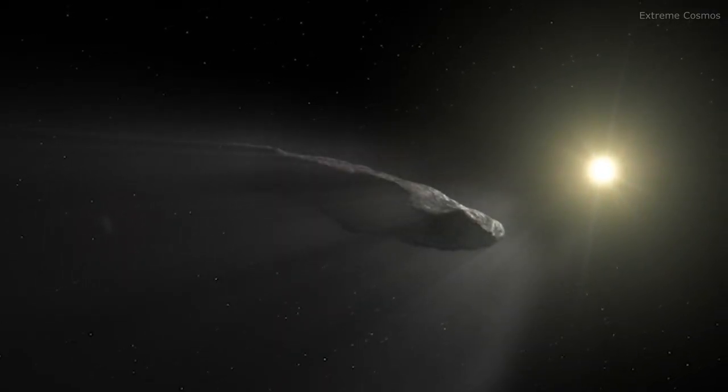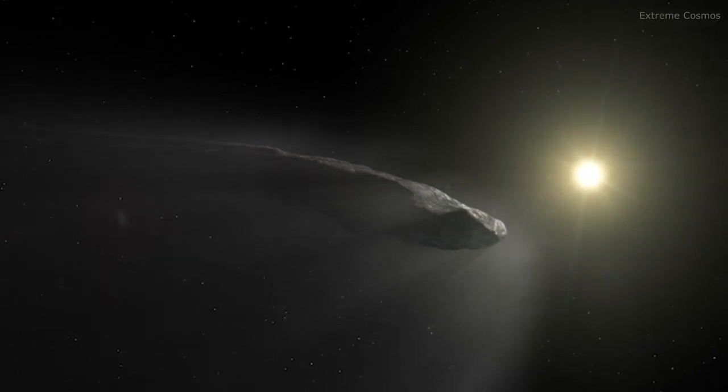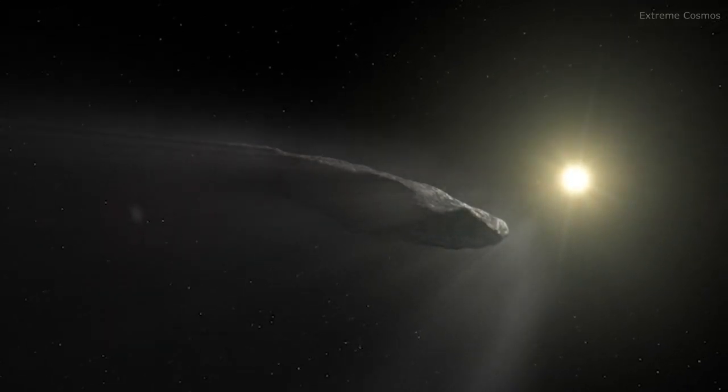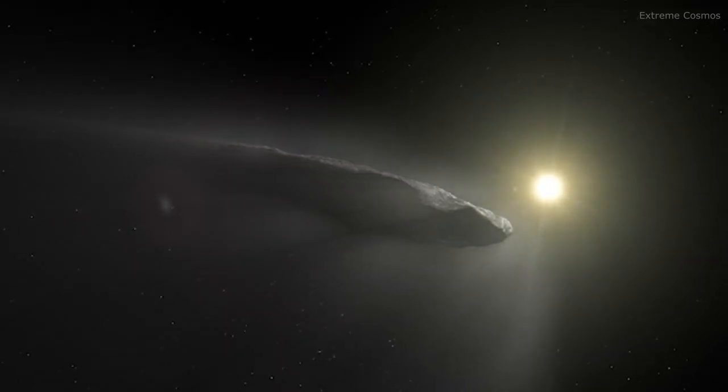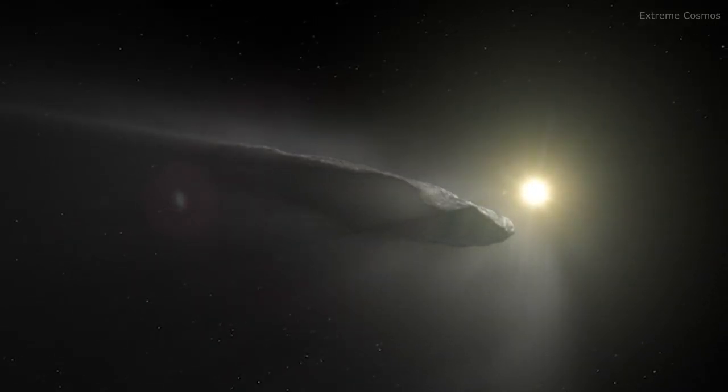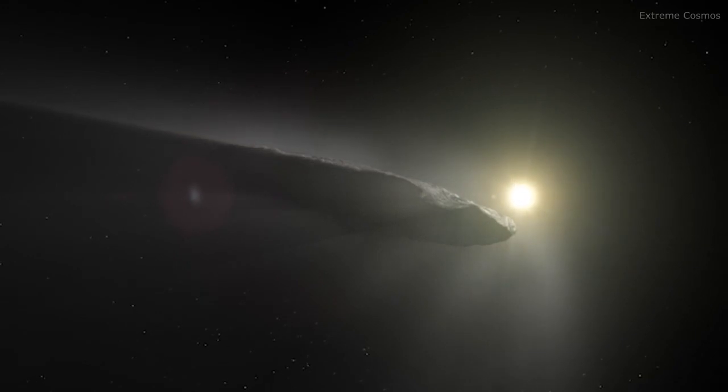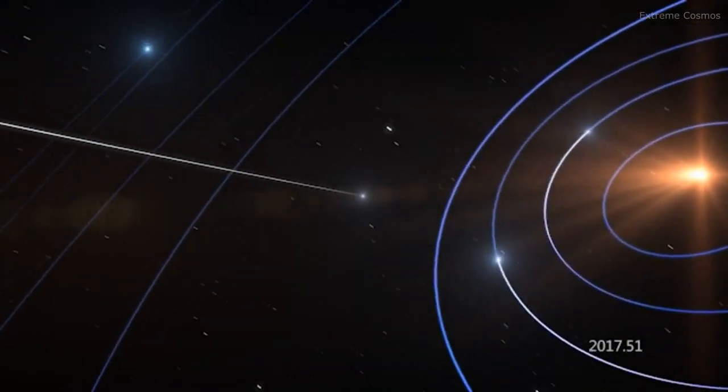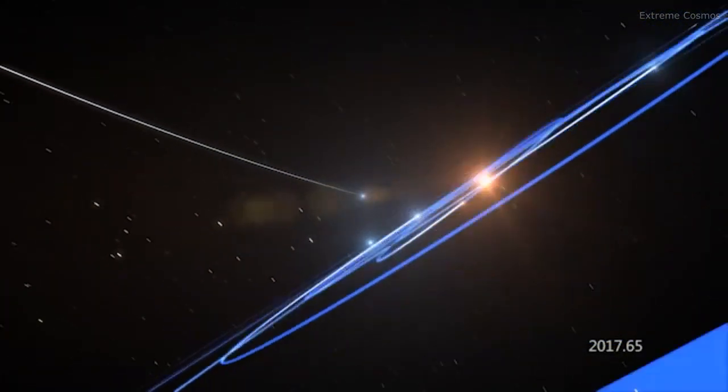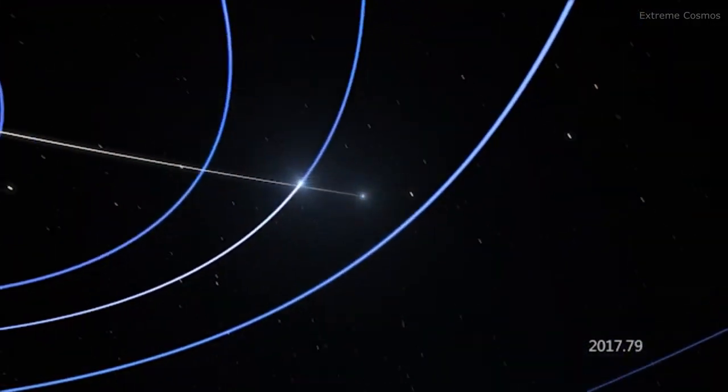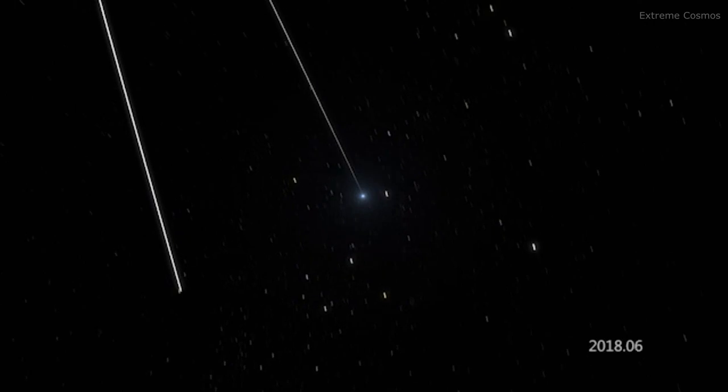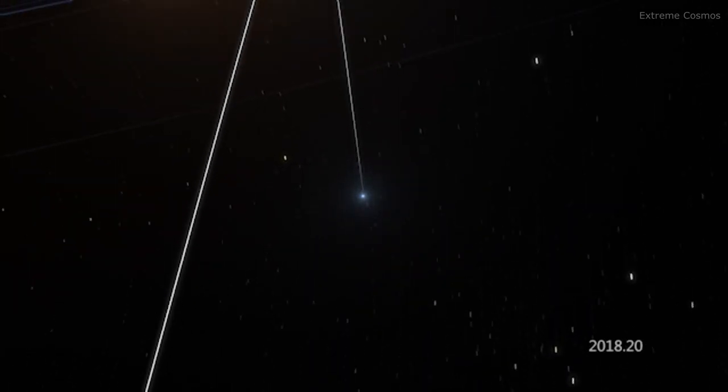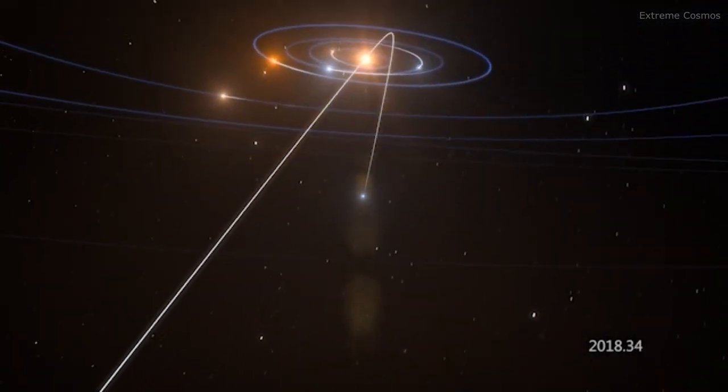The telescope has also captured observations of some special interstellar visitors. In 2018, Hubble studied Oumuamua, the first interstellar object discovered in the solar system. In cooperation with other ground-based telescopes, it was determined that the object was likely a comet and was moving away from the Sun faster than previously expected.